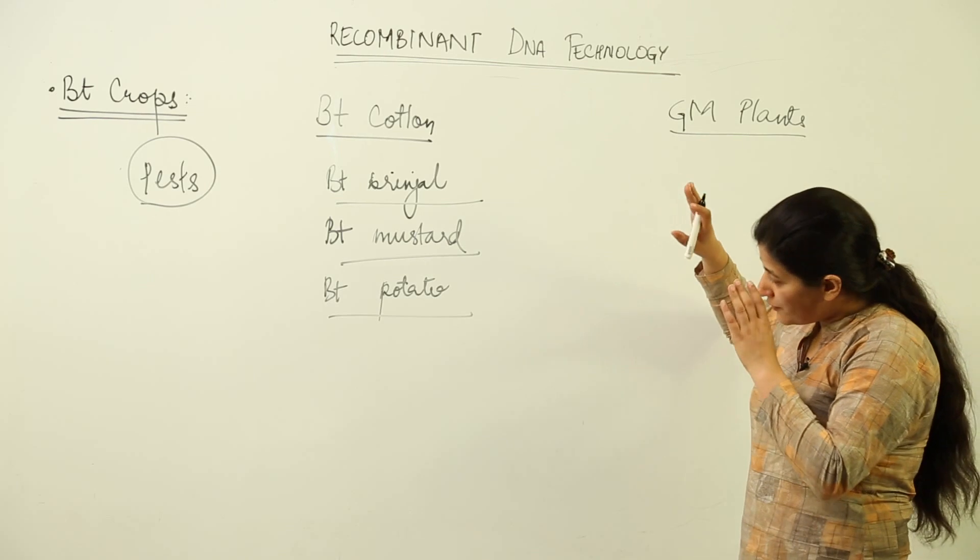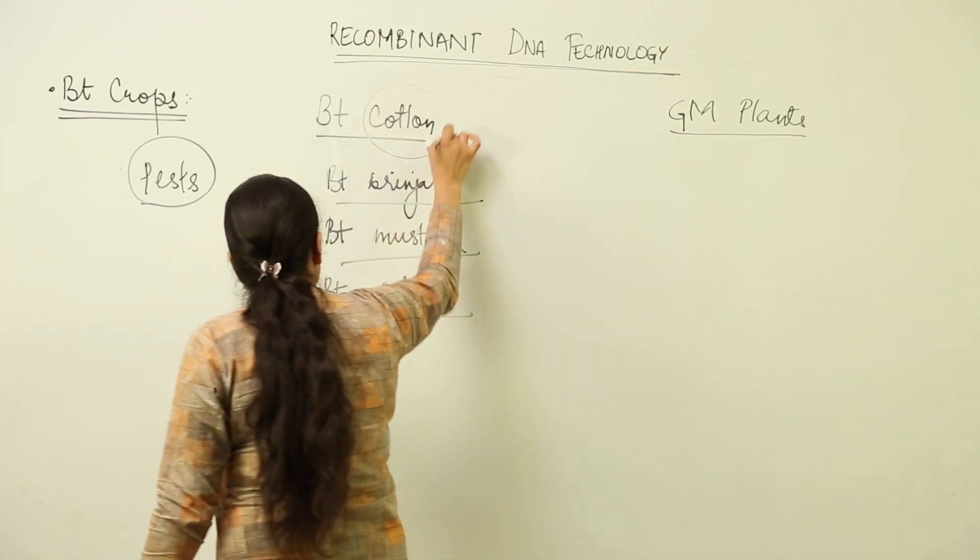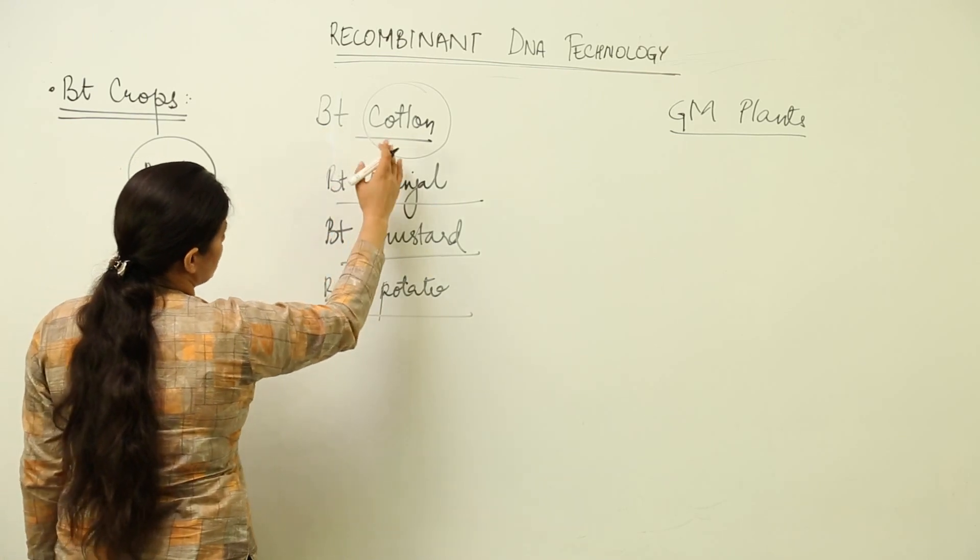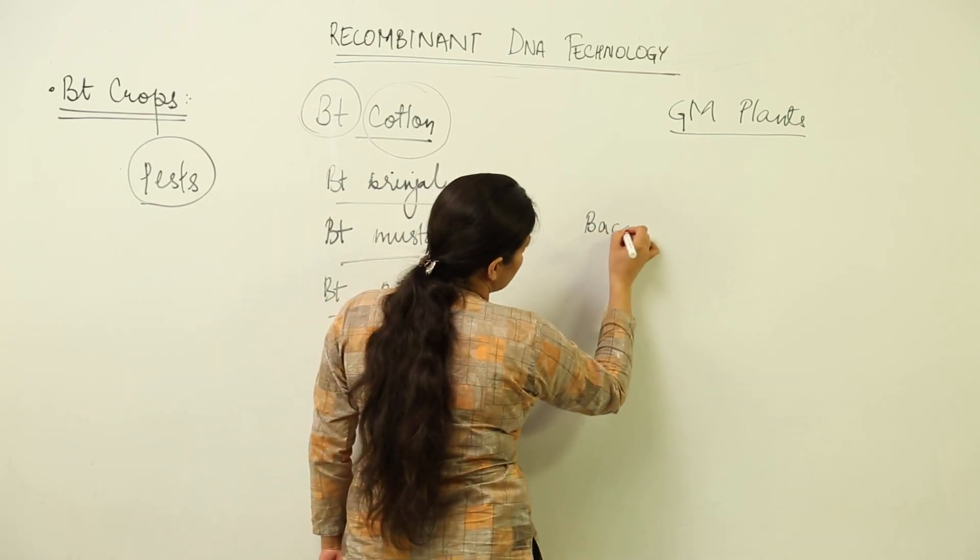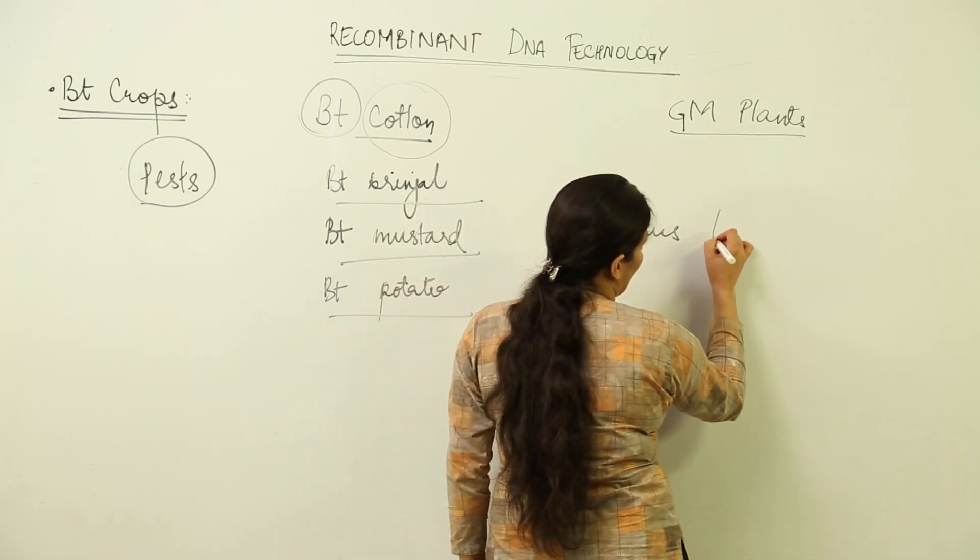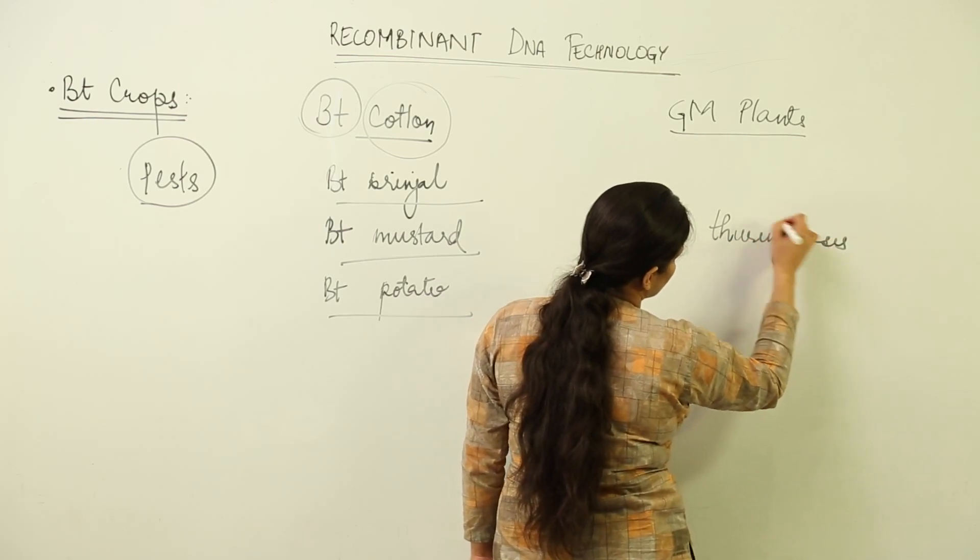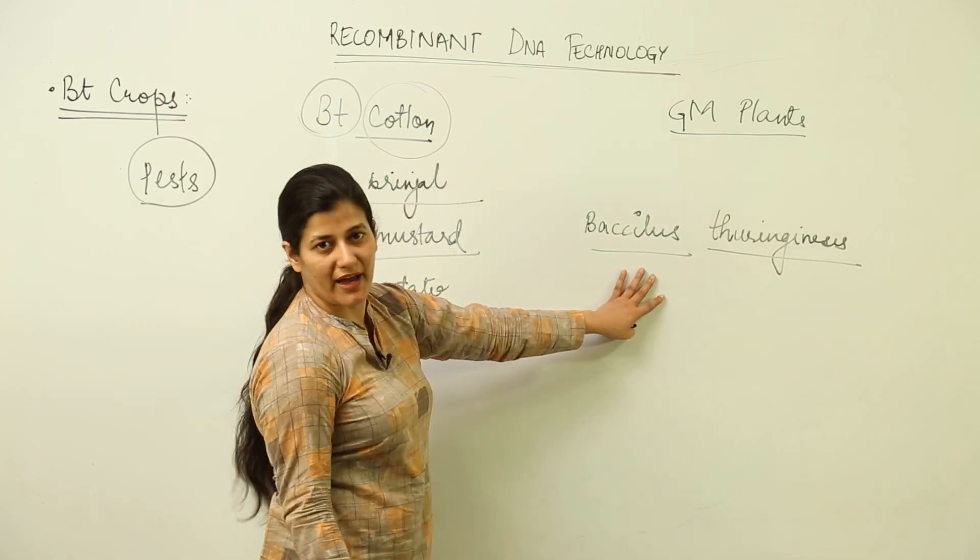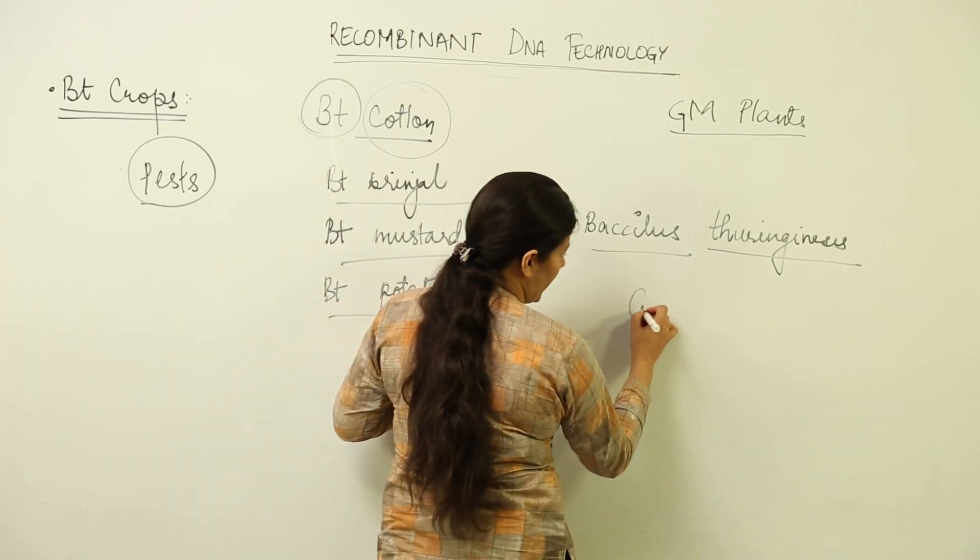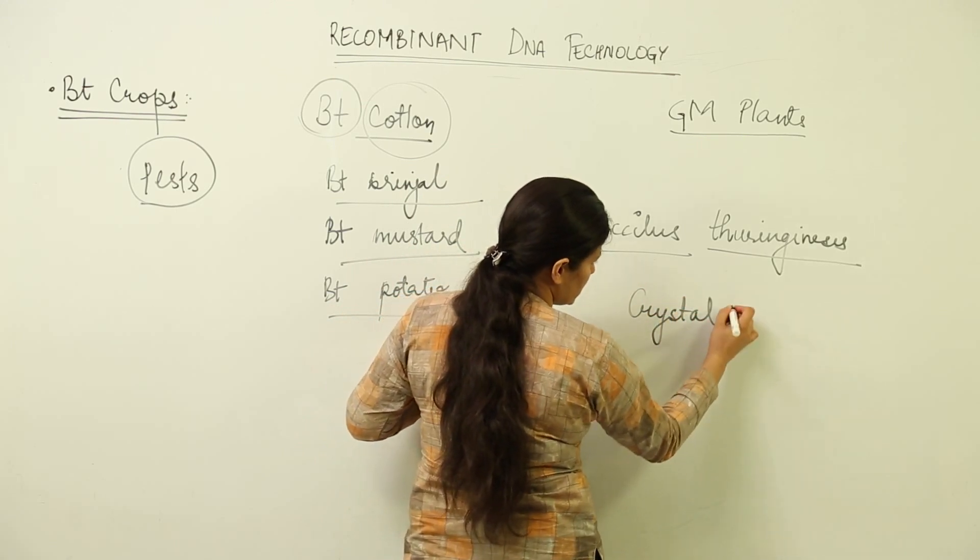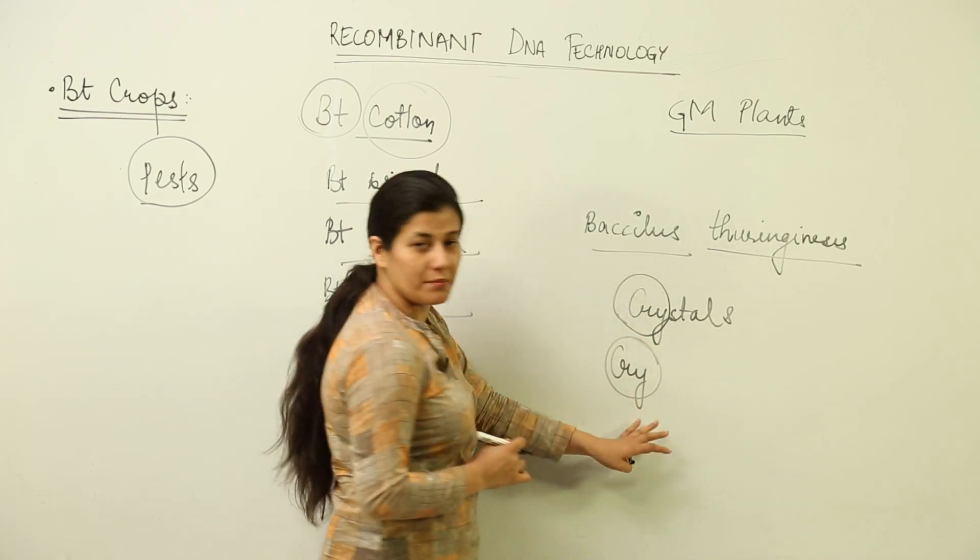What is BT cotton? This is derived from Bacillus thuringiensis. Bacillus is a bacteria - this is the genus name and thuringiensis is the specific name. This bacteria produces a certain category of endotoxins called crystals. From crystals, we have taken the word cry - remember this word.